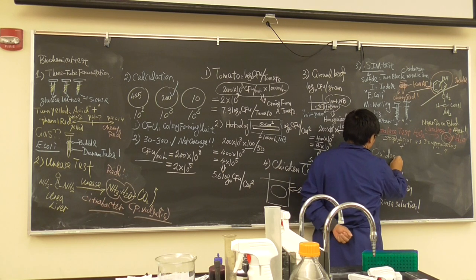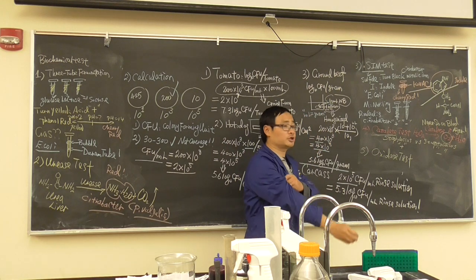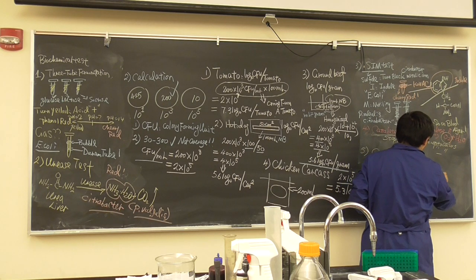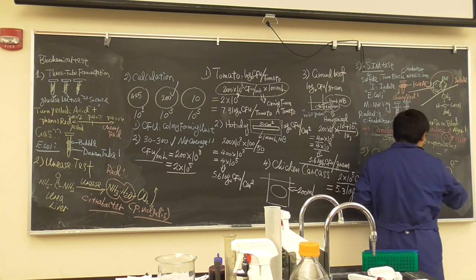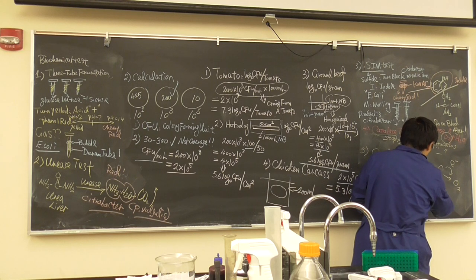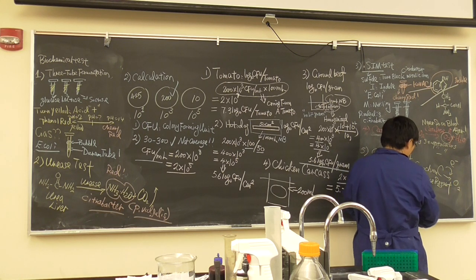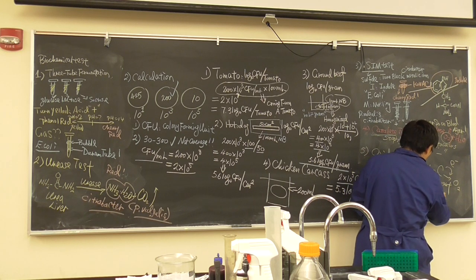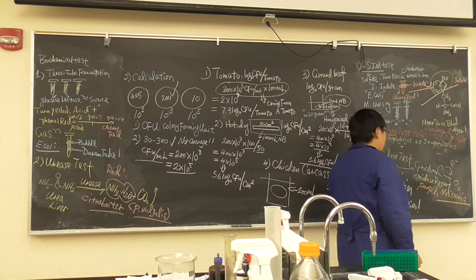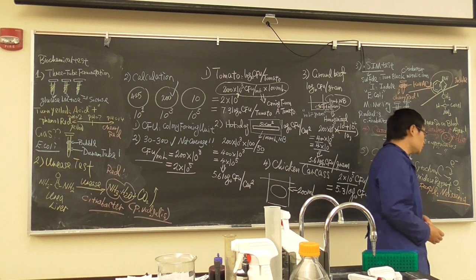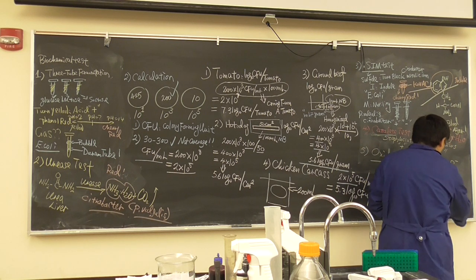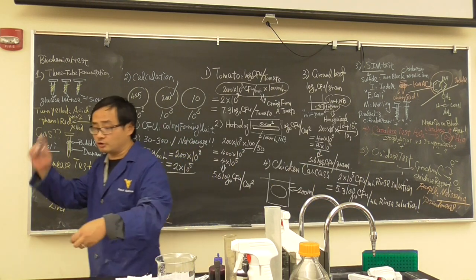Fifth is the oxidase test, which tests for cytochrome c oxidase — electrons are transferred to cytochrome c and then to oxygen. We add the oxidase reagent, and a positive result turns purple. The bacterium originally used for this test is Neisseria, but we didn't perform it; the expected answer for a positive oxidase result is Neisseria.